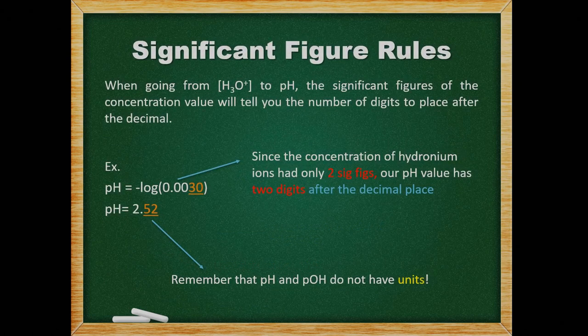When going from the concentration of hydronium to pH, the significant figures of the concentration will tell you the number of digits to place after the decimal. For example, what is the pH when the concentration of hydronium ions is 0.0030 moles per liter? Since the concentration had only two sig figs, our pH value will have two digits after the decimal place, giving us an answer of 2.52.